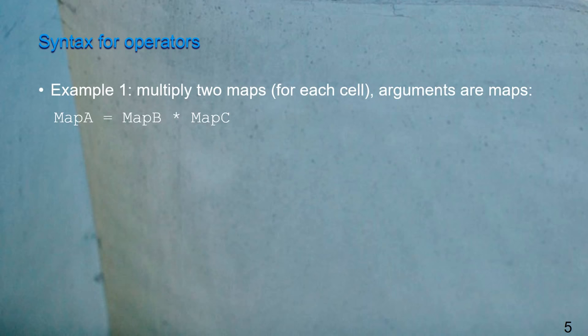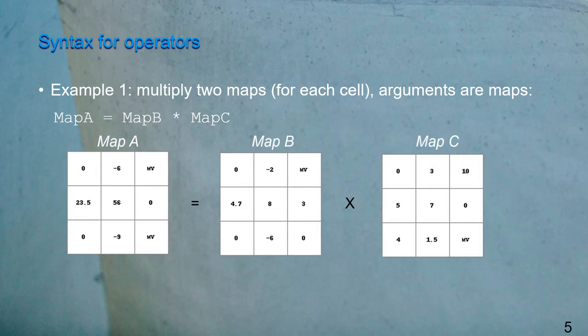The use of the syntax becomes clearer if we look at examples. In the first example, we are going to multiply two maps. So map A is the result map, and that equals map B times map C. We can see that if we look at the pixel in the middle, in map B it's 8, and we do it times 7 in map C, and that results in 56, which will be stored in the same location in the cell of map A.